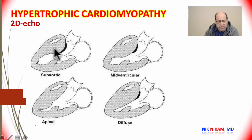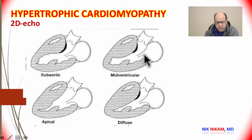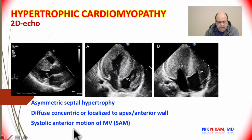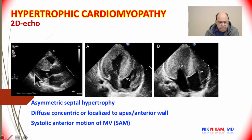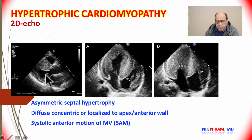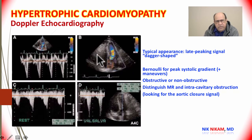Here are different types of left ventricular hypertrophy identifiable by echocardiography. Asymmetric septal hypertrophy leads to outflow tract obstruction. Uniform thickness of the septum can lead to mid-cavitary obstruction during ventricular systole. Apical hypertrophy and diffuse left ventricular hypertrophy are also shown. In asymmetrical hypertrophy, posterior wall thickness is much less than septal thickness, leading to left ventricular outflow tract obstruction at the base along with systolic anterior motion of the anterior mitral leaflet.